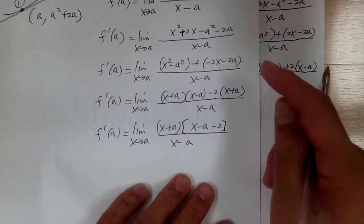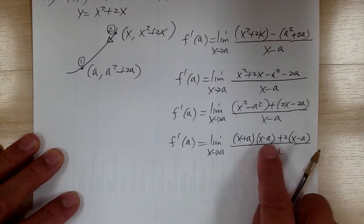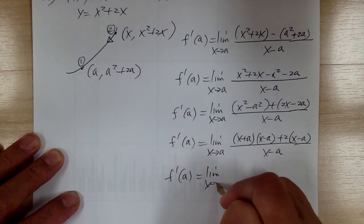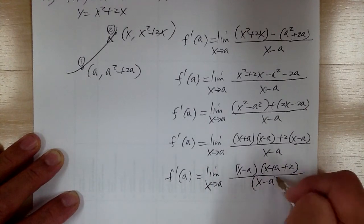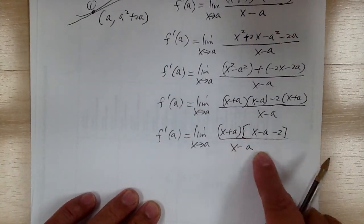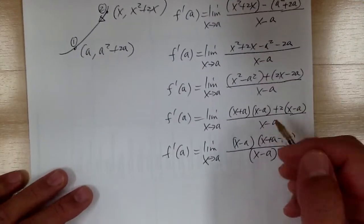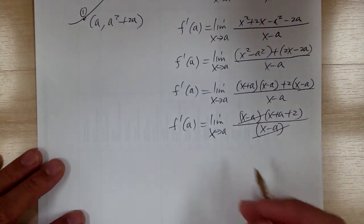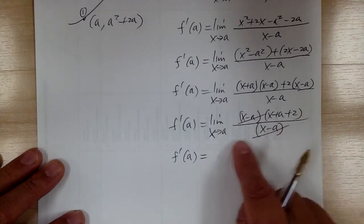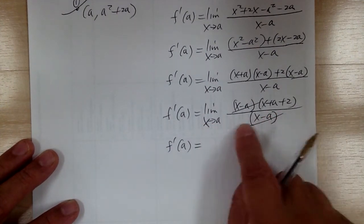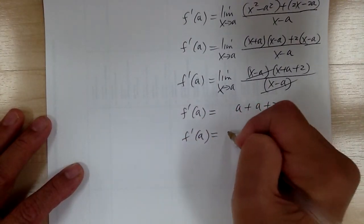Now factor out x minus a, and you've got x plus a plus 2. When there's nothing that can cancel, that means something is wrong — go back and check. Sure enough, the sign was wrong before. Now something cancels. As soon as I cancel, I can substitute. Before, if x equals a, this becomes 0. Now it's canceled — I can substitute: a plus a plus 2. So f prime of a equals 2a plus 2.